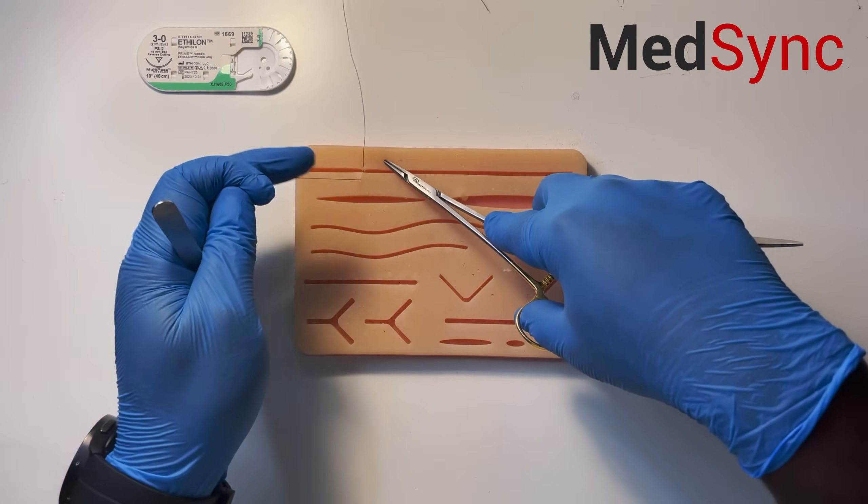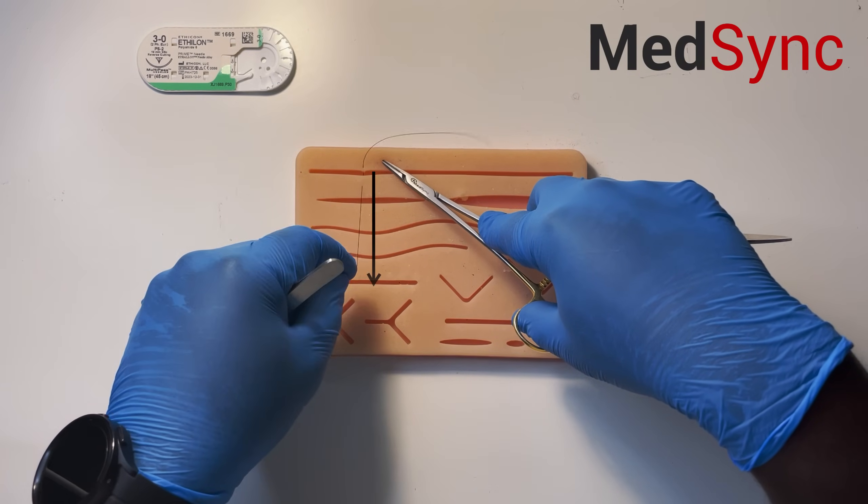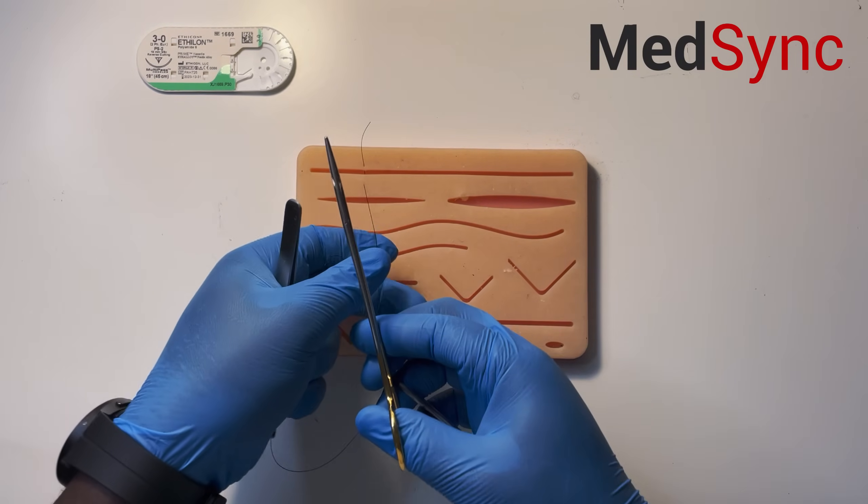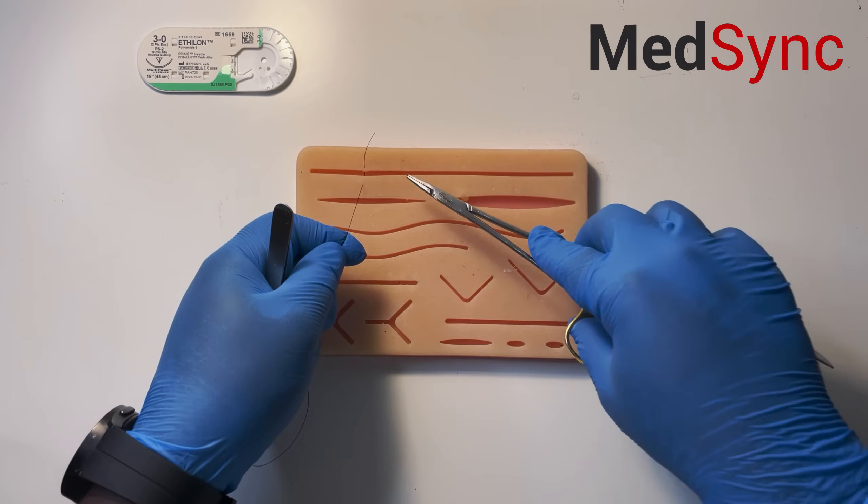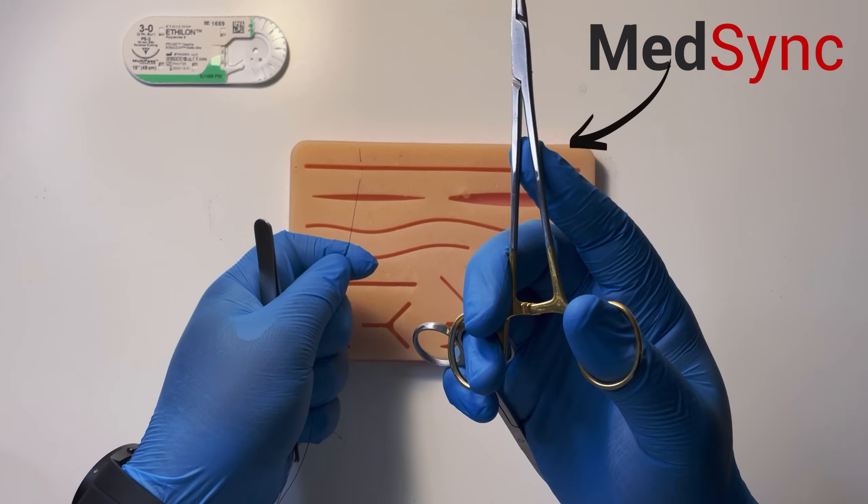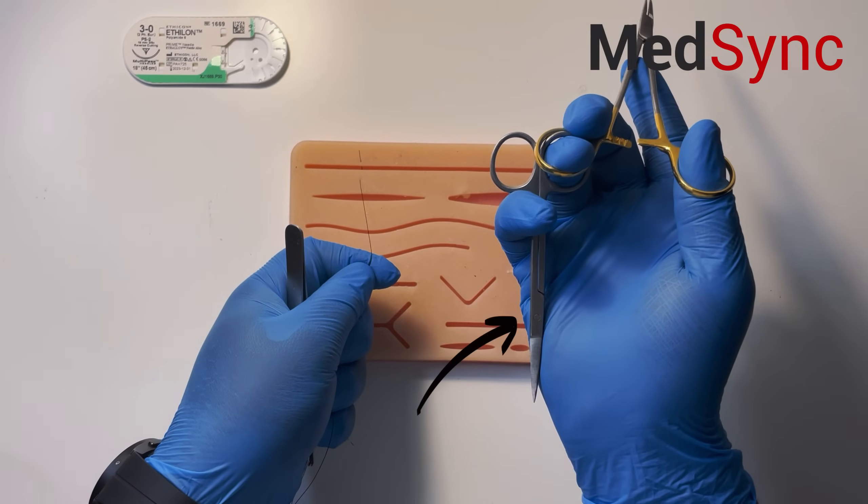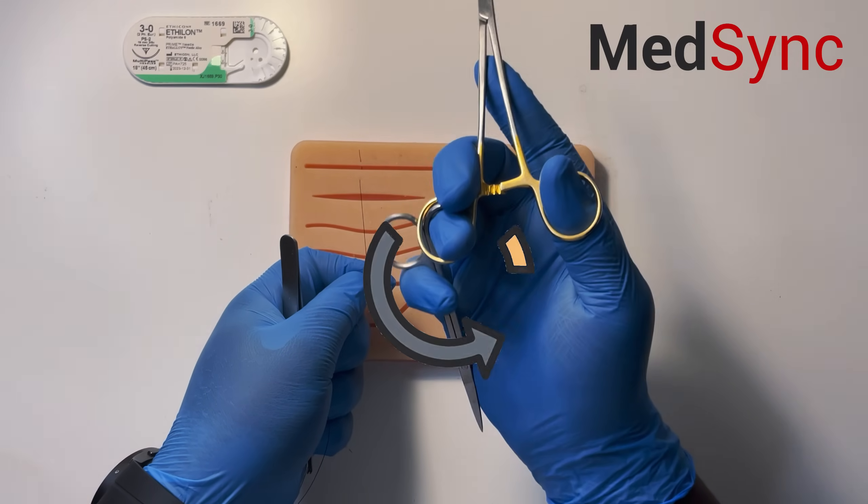You grab the suture and pull it in one hand. This is not tug of war. You don't need to pull it like this. Just pull it in one hand. Your forceps are here, your needle holder is here, and your scissors are here. This is economy of movement.